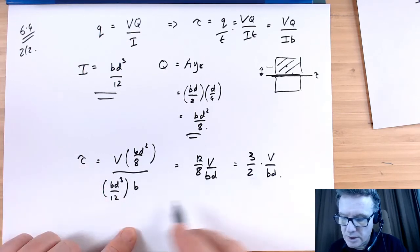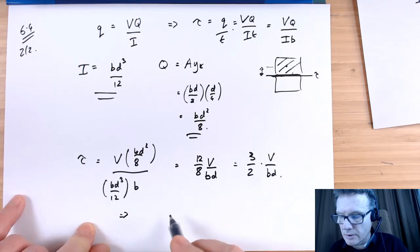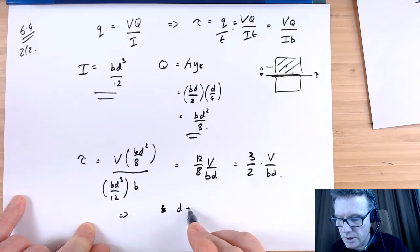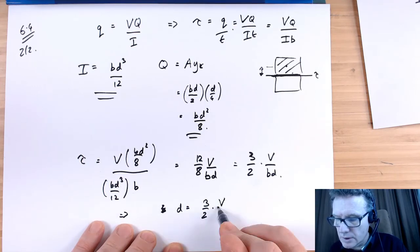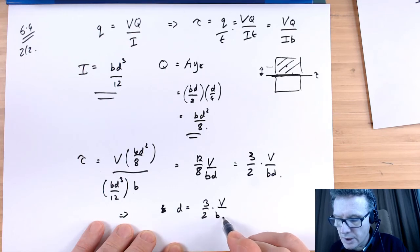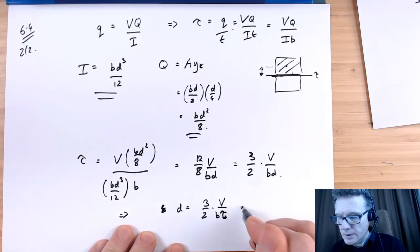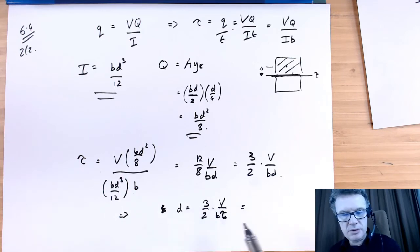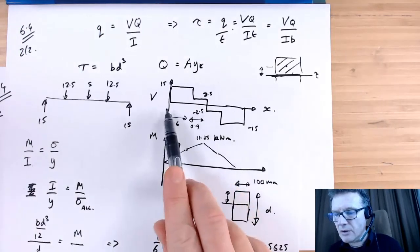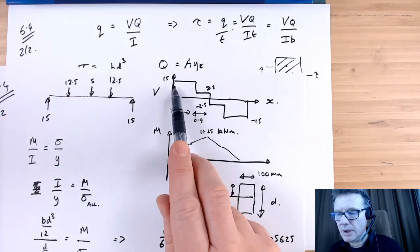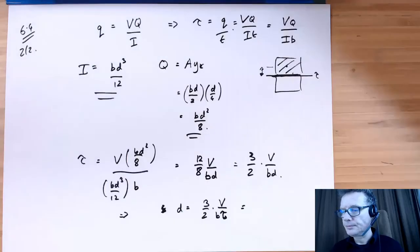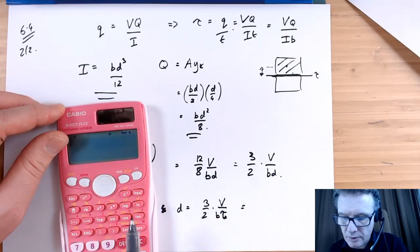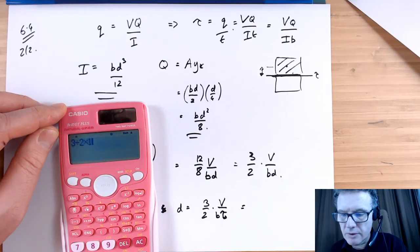Let's rearrange for D. Therefore, D equals 3 over 2 times V, divided by B times the allowable shear stress. The V I use is the biggest V from my shear force diagram, which is 15 kilonewtons. So D equals 3 divided by 2 times 15,000 divided by 100 millimeters.